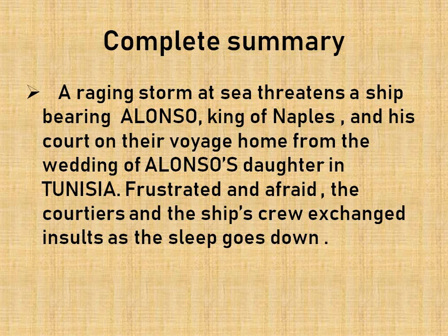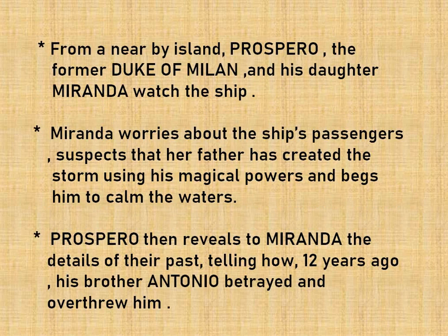Now I am going to give a complete summary. A raging storm at sea threatened a ship bearing Alonso, king of Naples, and his court on their voyage home from the wedding of Alonso's daughter in Tunisia. From a nearby island, Prospero, the former Duke of Milan, and his daughter Miranda watch the ship. Miranda worries about the ship's passengers, suspects that her father has created the storm using his magical power, and begs him to calm the water.